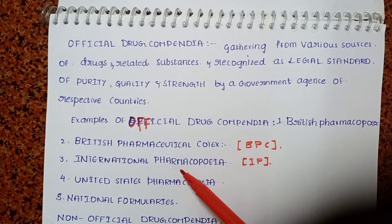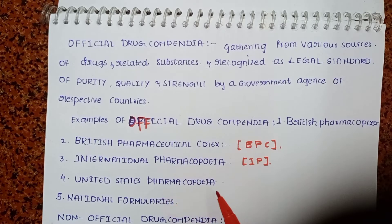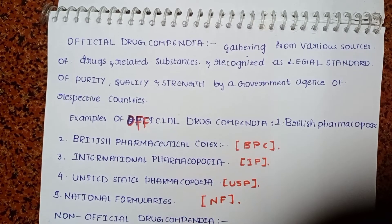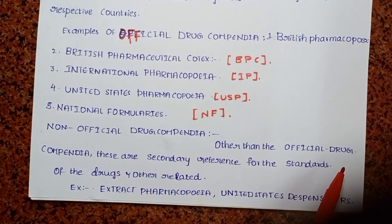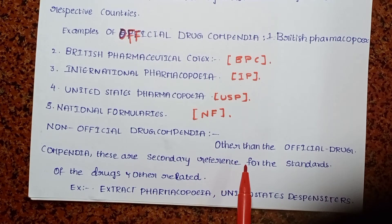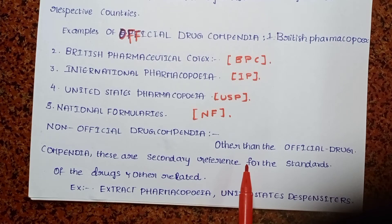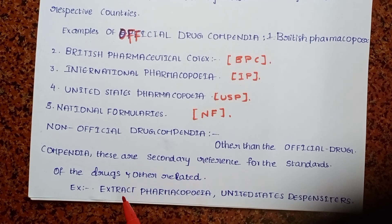For the United States, it is named the USP — United States Pharmacopoeia. The second type is non-official drug compendia, which are secondary references that give information about drugs and other related substances. Examples include the Extra Pharmacopoeia and the United States Dispensatory.